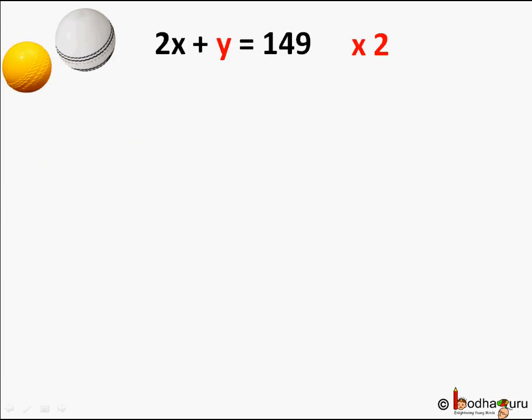So we multiply both left hand side and right hand side of the first equation by 2. Remember you cannot just multiply left hand side or right hand side. You have to multiply by same value on both sides to get an equivalent equation. So after multiplying the first equation 2X plus Y equals 149 by 2, we get 4X plus 2Y equals 298.